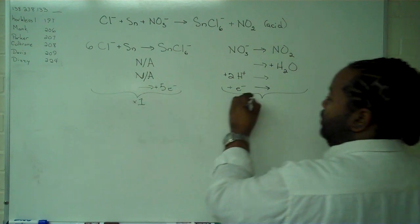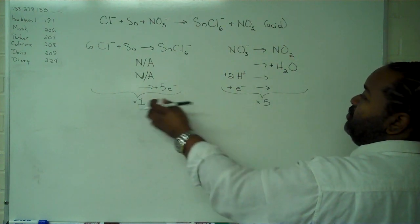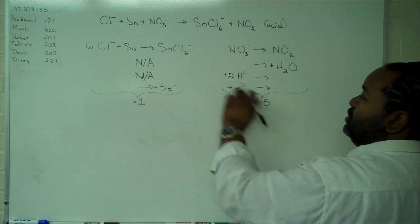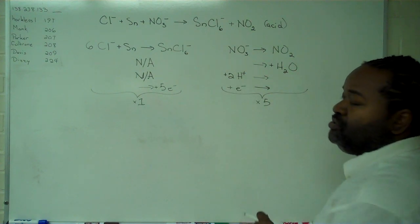So we want to multiply here by one and here by five. This is going to be five electrons as product and five electrons as reactant to allow cancellation.